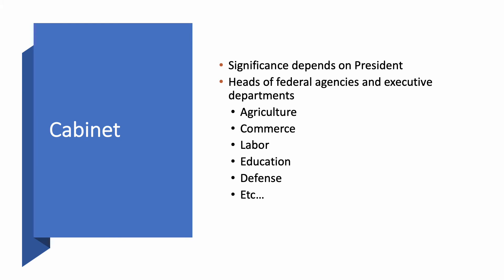The cabinet is the heads of the federal agencies and executive departments. Theoretically the cabinet is very important, but it depends on whether presidents want to meet with them or not. They often don't even call them together as a group. It isn't really an important policymaking body as a group, although each individual department head or agency head might be powerful. As a group, they often aren't — but they could be, if a president wanted to use them that way.